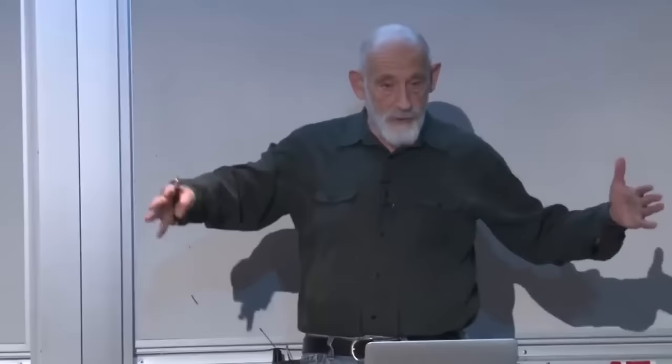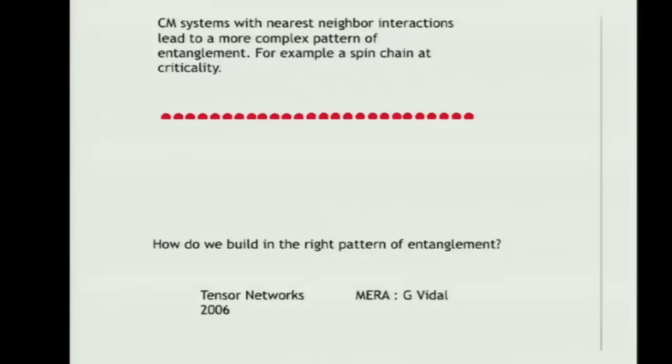Condensed matter systems are much like quantum field theories in many respects. One particular kind is called a spin lattice—a lattice of degrees of freedom laid out in space, a bunch of qubits or spins. Assuming they're interacting in neighboring pairs, that creates a specific pattern of entanglement between them. The question for a condensed matter physicist is: could we use the pattern of entanglement to get a handle on the wave function? The answer is yes.